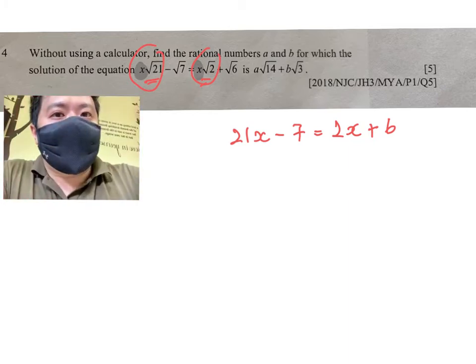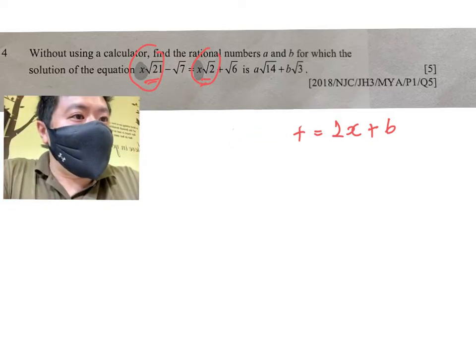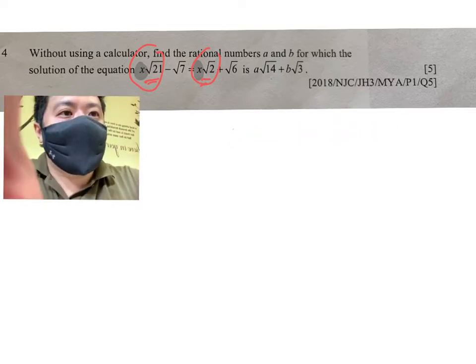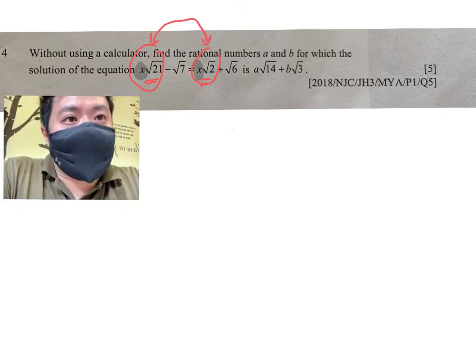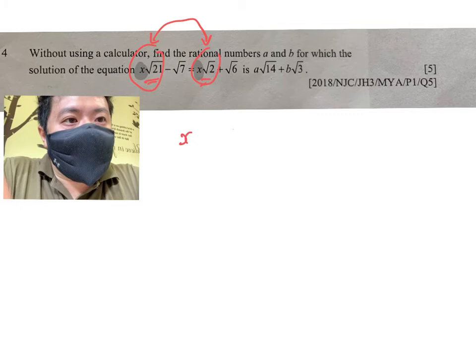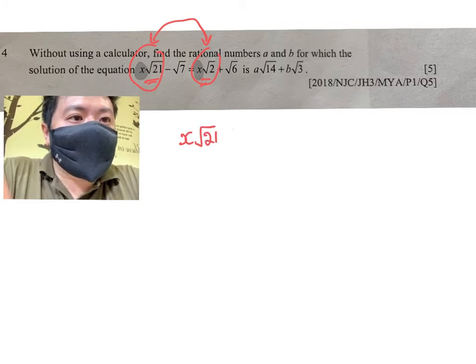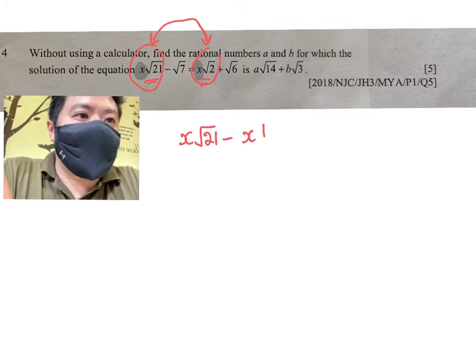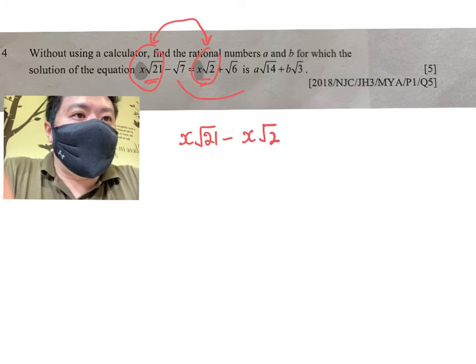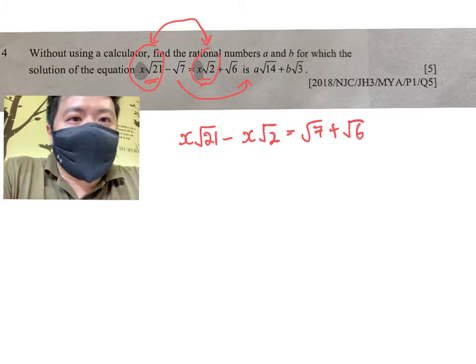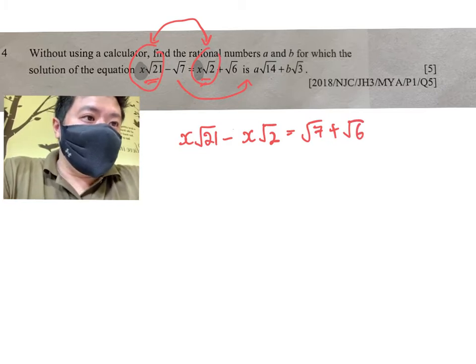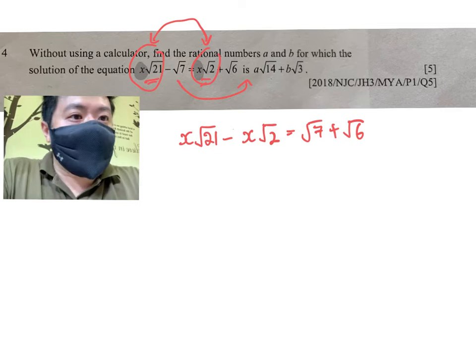With that, I'll just go straight to the question itself. The first step: we want to combine the two terms that contain X side by side. So I have X√21 minus X√2, and I'm going to bring my √7 over, so this is √7 plus √6.